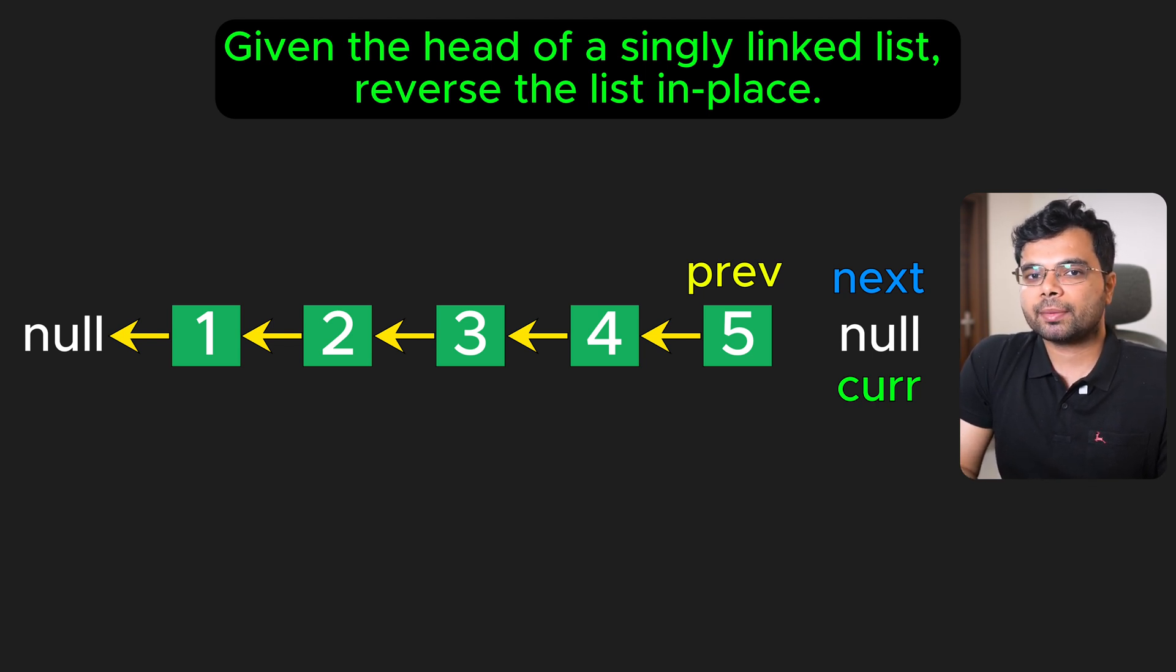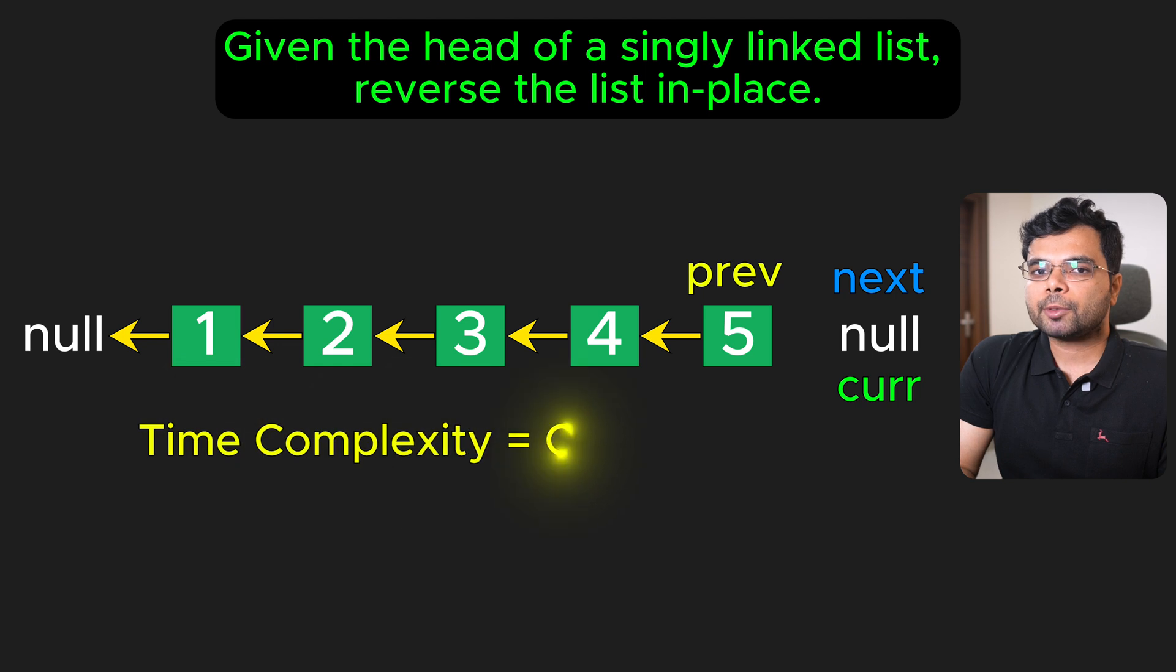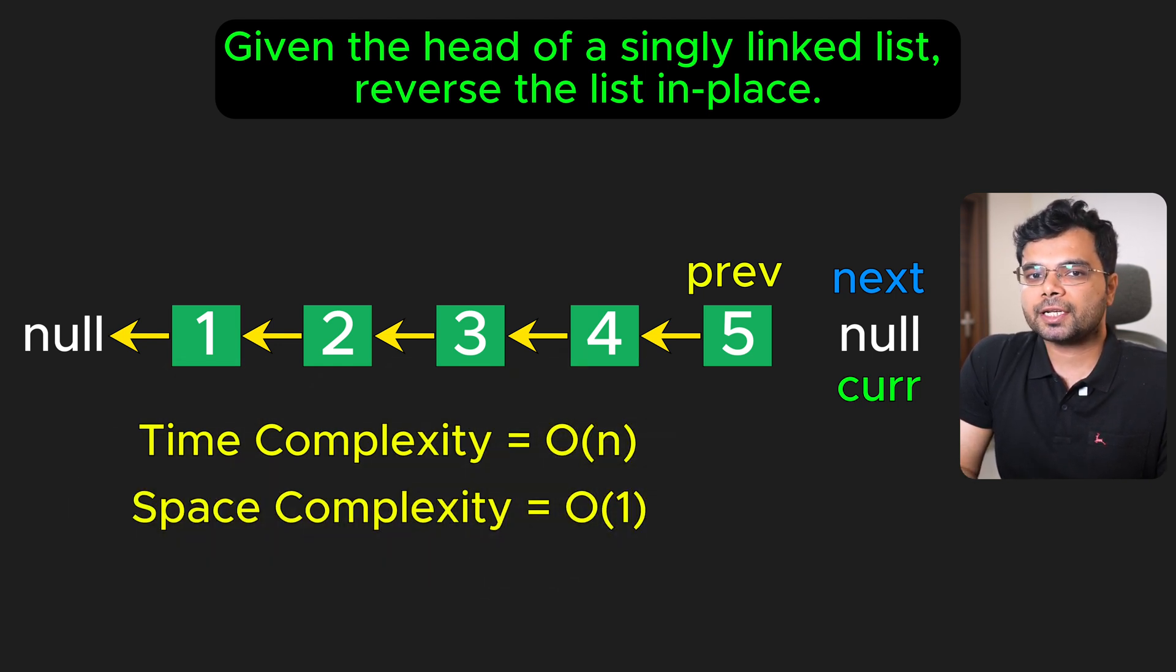we reverse the list in place without using any extra memory other than the three pointers. The time complexity is O(n) where n is the number of nodes in the linked list. The space complexity is O(1) since we only use a few pointers and don't allocate any extra space for storing the list. Here is